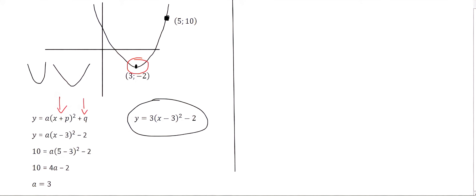Many times the question will ask you to find the equation in the form y = ax² + bx + c. To get from the turning point form to this required form, it is simply a matter of multiplying out the brackets, and then you can identify your a, b, and c values.